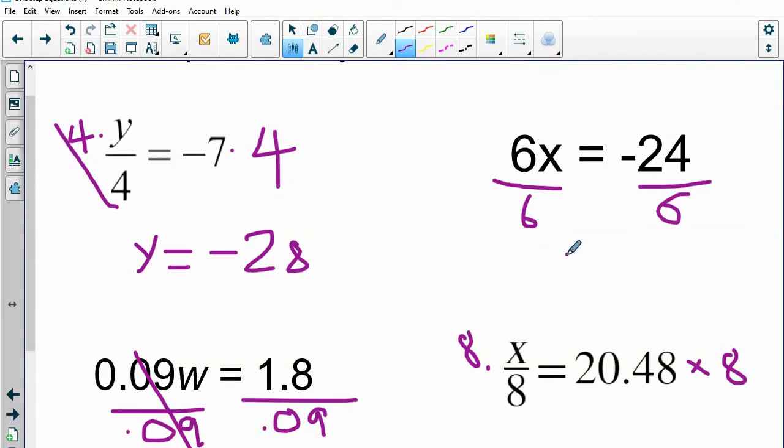6 divided by 6 is 1, so we just have 1x = -24 / 6. Negative divided by a positive is negative, 24 divided by 6 is 4.